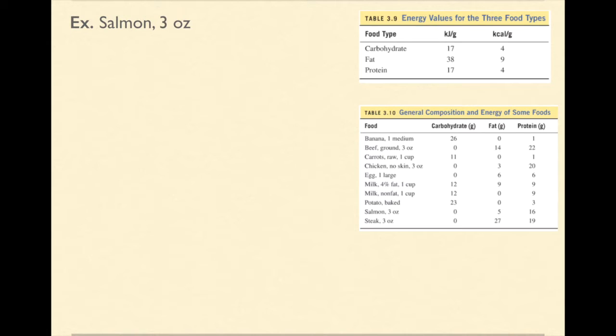If you look at table 3.9, carbohydrates have four kilocalories per gram, fat has nine kilocalories per gram and protein has four kilocalories per gram.